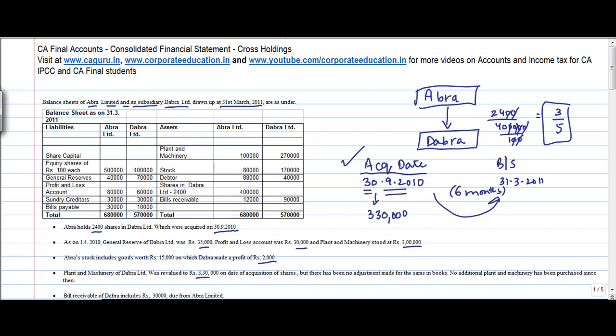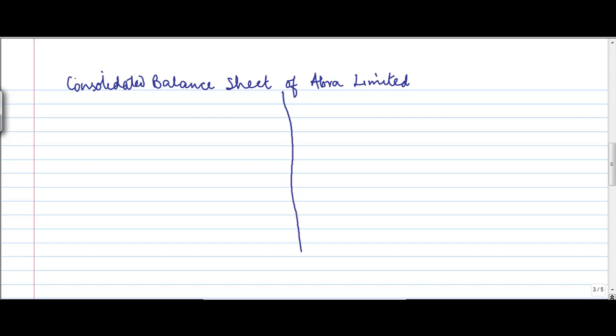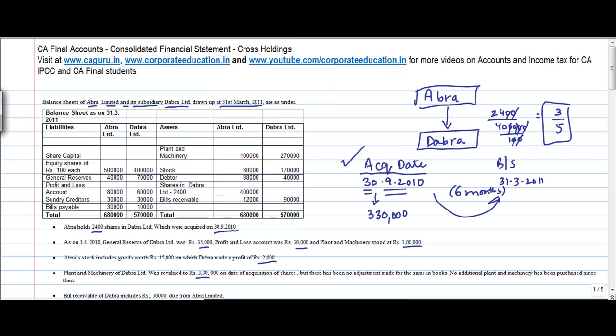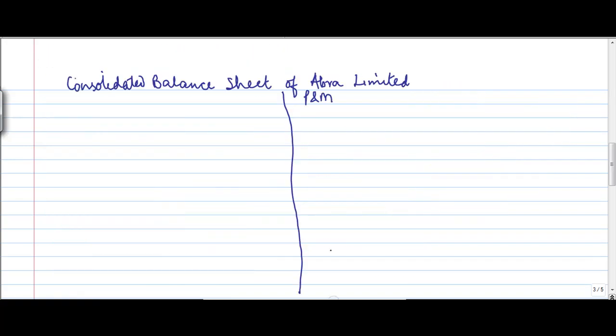So should I start preparing the consolidated balance sheet? Let's first, the simplest step will consolidate whatever is the simple stuff. So plant and machinery, well there are quite a few adjustments here so I am not touching it right now. Let me just start preparing the consolidated balance sheet. So plant and machinery, this is 1 lakh for Abra, 2,70,000 for Dabra. So 3 lakh 70,000 is the plant and machinery. Plus there is some revaluation which I will come to later on.